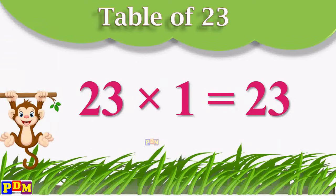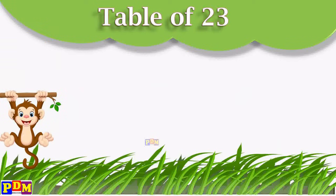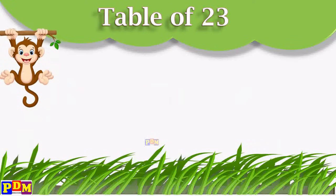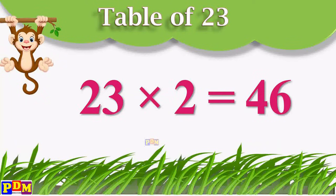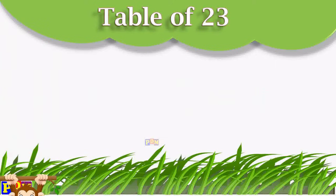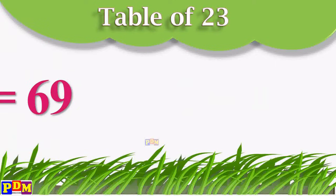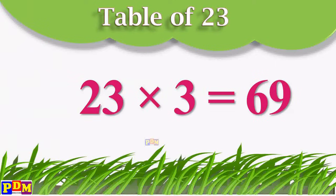23 ones are 23. 23 twos are 46. 23 threes are 69.